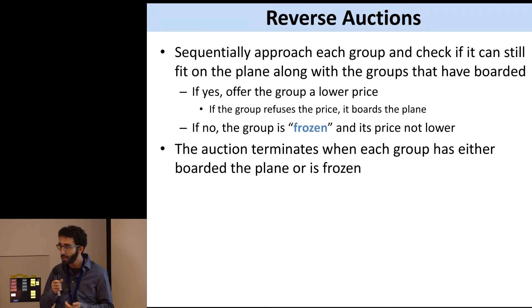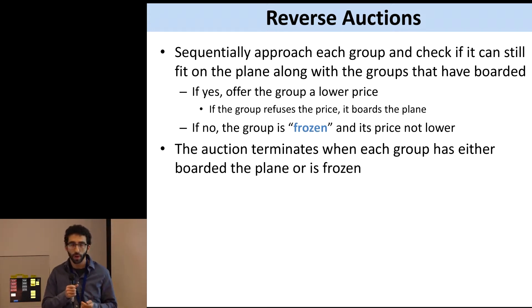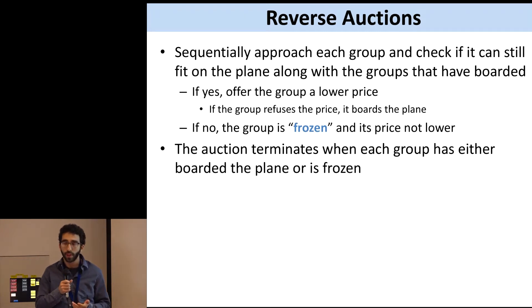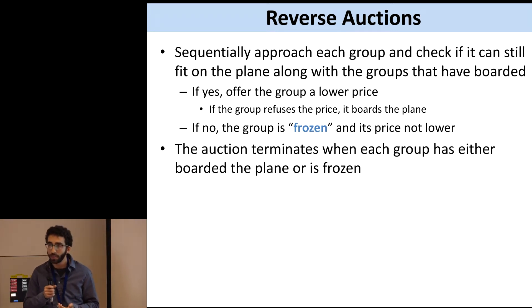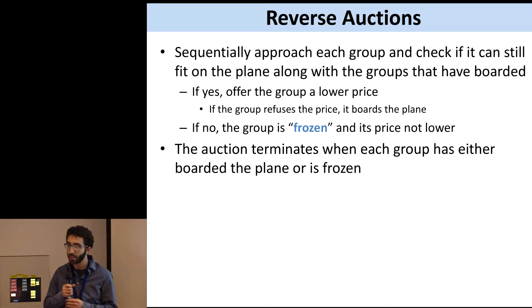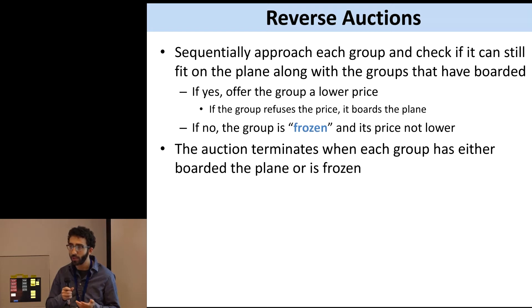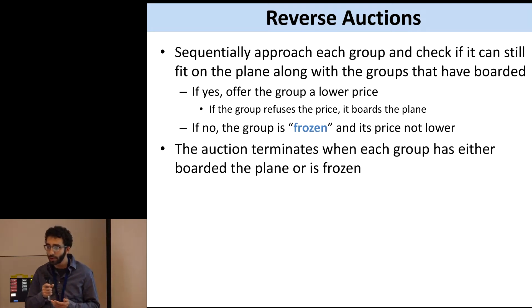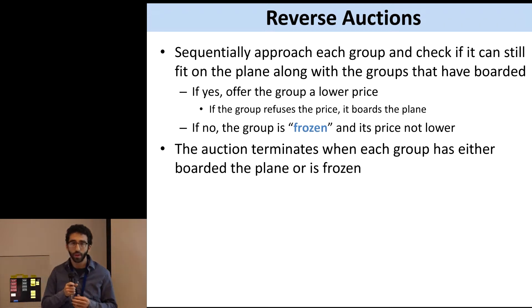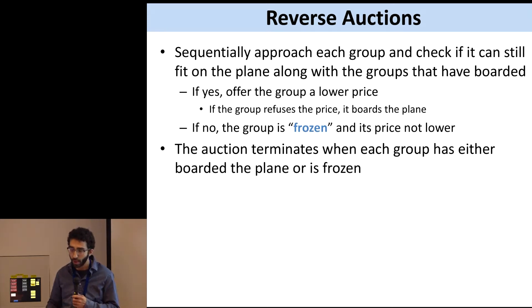After this, you have some groups still not on the plane, and you want to lower their prices. You go one by one to each group and see if it can still fit on the plane alongside all the passengers already on the plane. If it can, you lower its price and make it a new offer. If it accepts, great. If it rejects, it boards the plane and leaves the auction. If you cannot fit a group on the plane, that group's price is frozen — you're not allowed to lower it. The auction ends when every group is either frozen or on the plane, and you pay frozen groups the prices at which they froze.